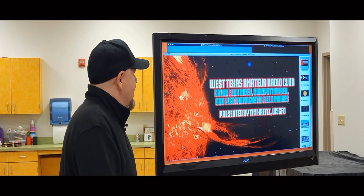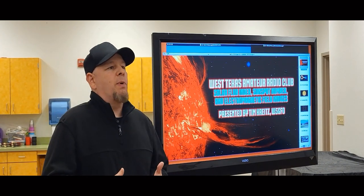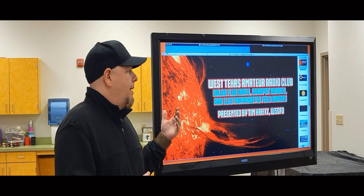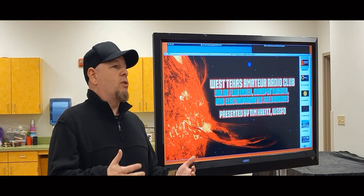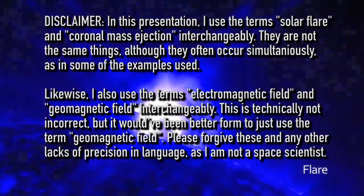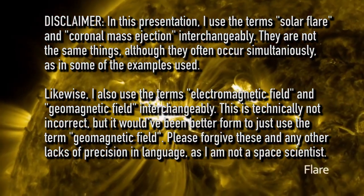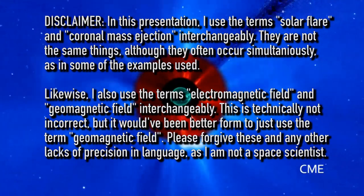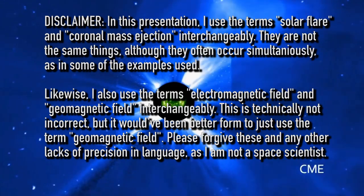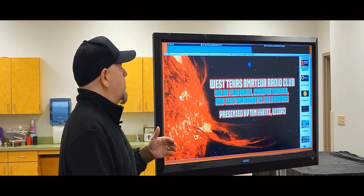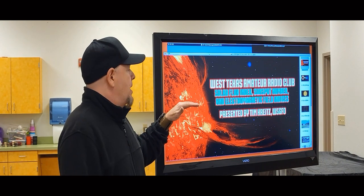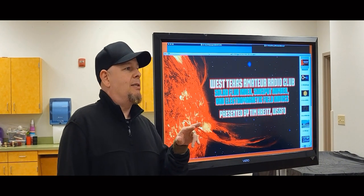I'm Tim Kreitz, W5GFO, and the purpose of this presentation is to delineate the difference between sunspot number, solar flux index, and the A and K indices, because there seems to be a lot of confusion. I was really confused coming back to ham radio in 2020 during the pandemic. I knew from the first time around in the 90s that sunspot number was significant and that more sunspots generally meant better HF band conditions, but I didn't understand all this other stuff.